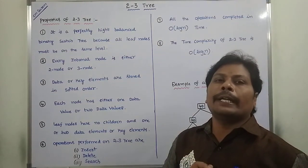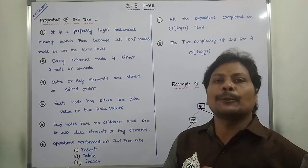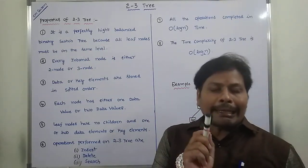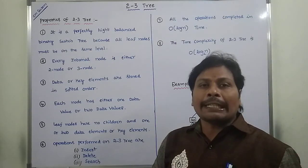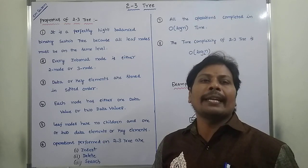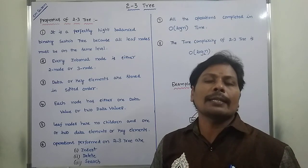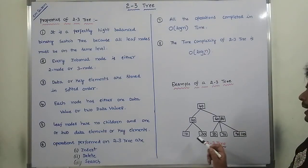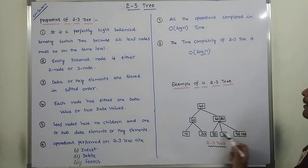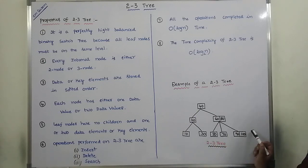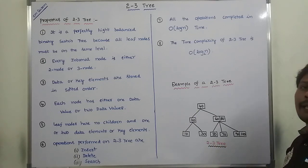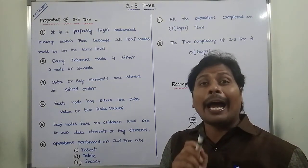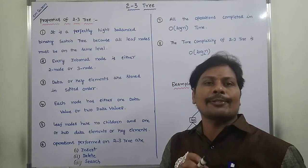Now the properties of the 2-3 Tree. The first property is that the 2-3 Tree is a perfectly height-balanced Binary Search Tree because all the leaf nodes are at the same level. Hence, we can say that the 2-3 Tree is always a perfectly height-balanced Binary Search Tree.